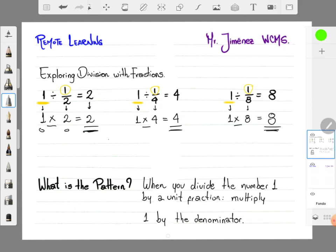The answer 2 is always the denominator, the number 4 is always the denominator, and the number 8 is also the denominator, just when you divide the number 1 by a unit fraction. That's it, thank you so much.